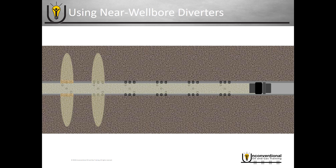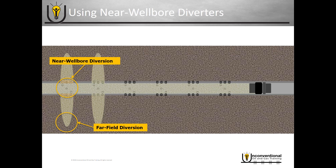Now I do want to clarify that what we're referring to specifically right now is near wellbore diversion — all of your diversion is actually occurring very near your casing and near your wellbore. There's also another technique called far field diversion, which goes out deeper into your frack. It involves different techniques and different objectives. We'll talk more about far field diversion in later modules, but for this module we are focusing on near wellbore diversion.